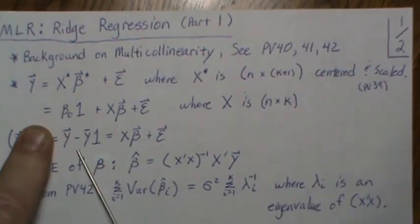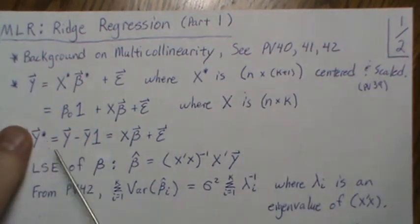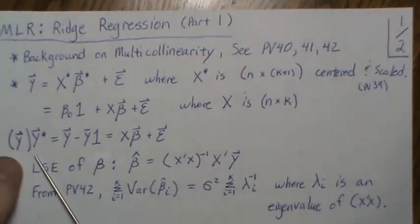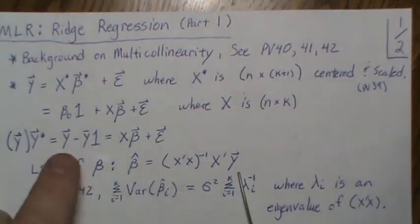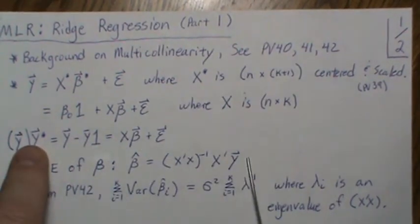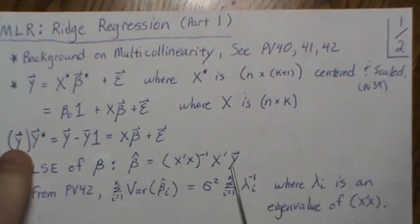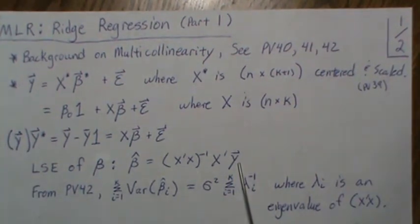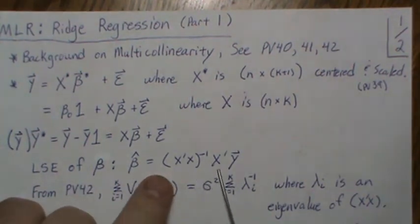This new variable y, where we subtract the mean of y from each component, would usually be called y-star. But I'm just going to call it y because I don't like carrying that star through all the development. So when we look at the least squares estimate for beta, this y should technically be y-star, but I'm relabeling it just y. Each component has the mean subtracted off. The least squares estimate of beta is (X-transpose X) inverse X-transpose y.